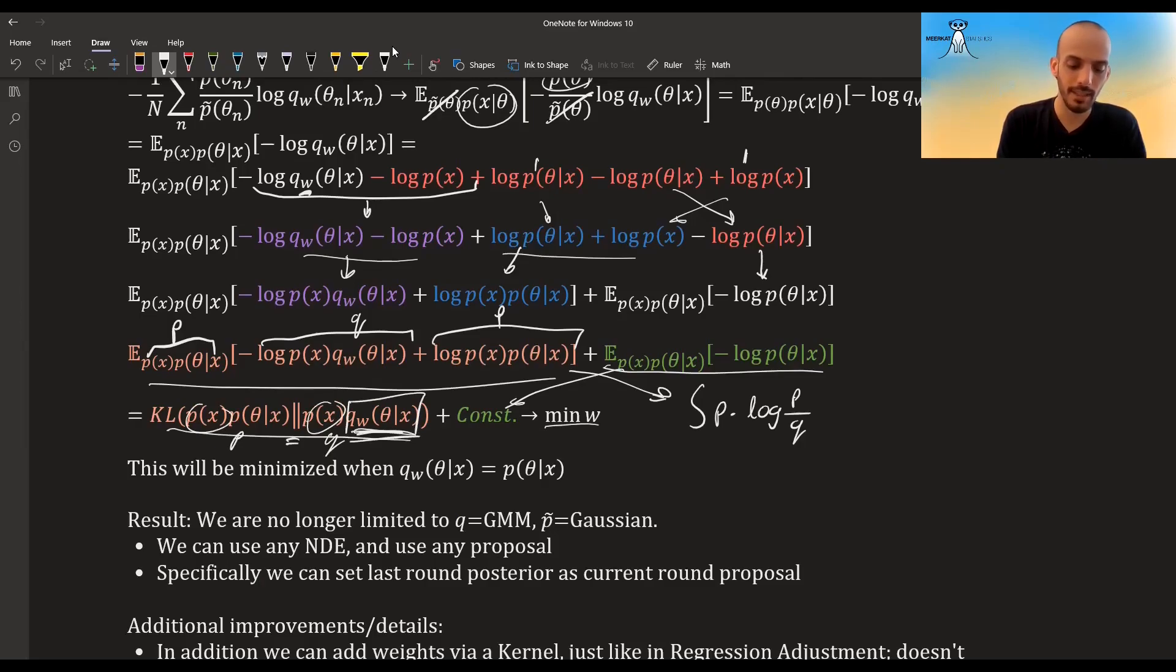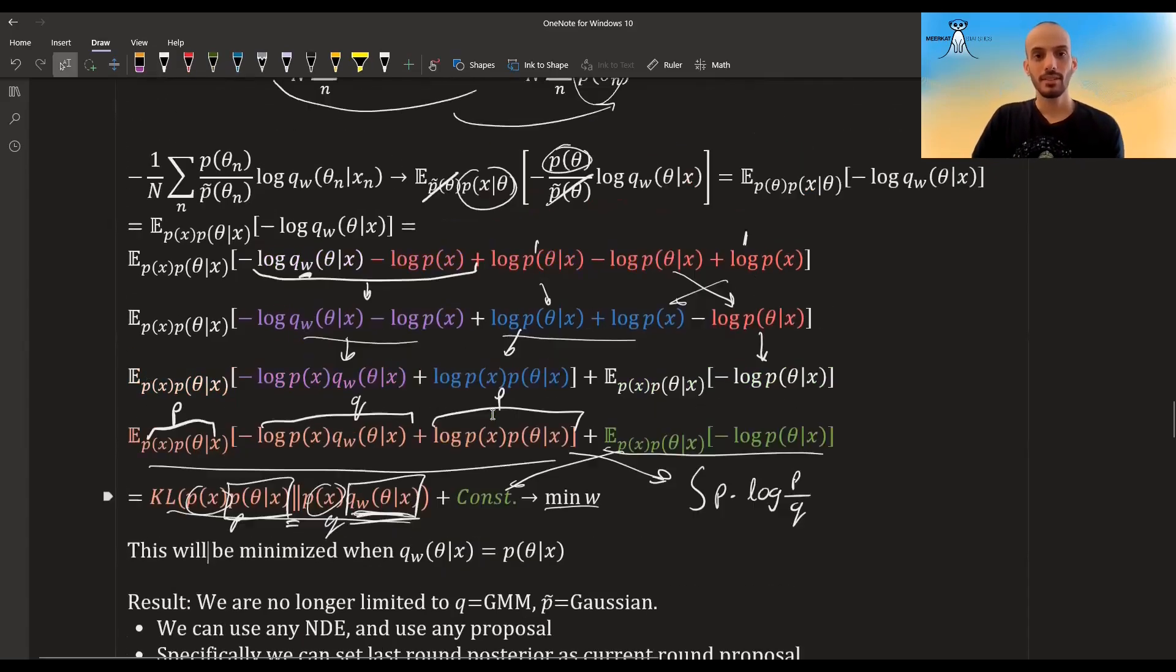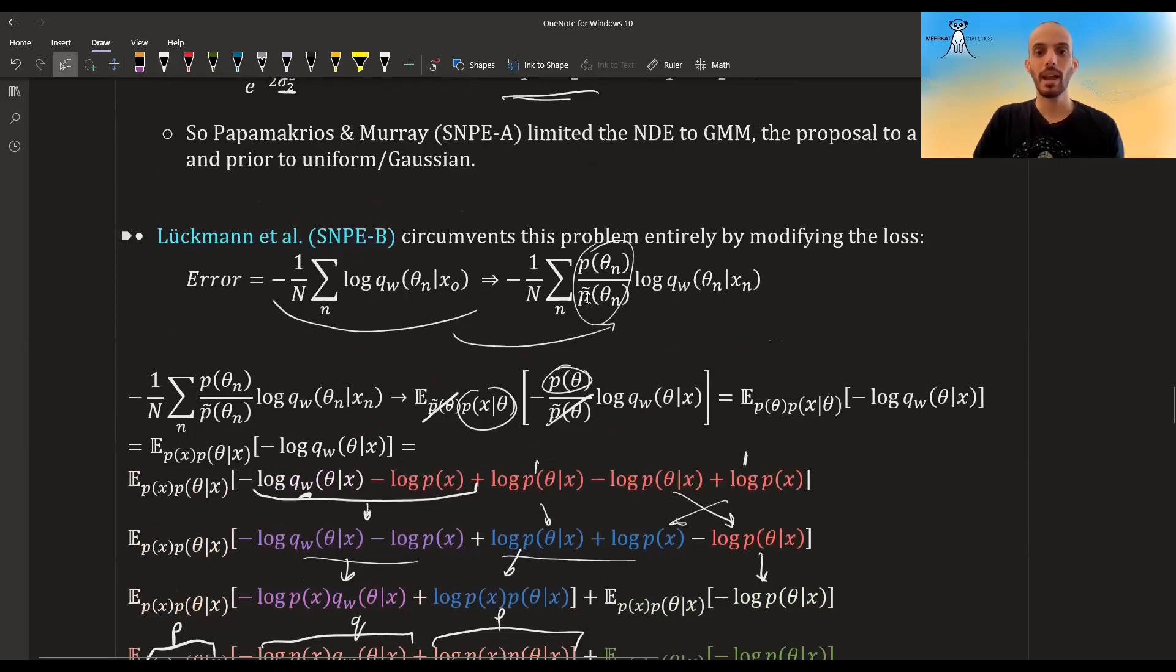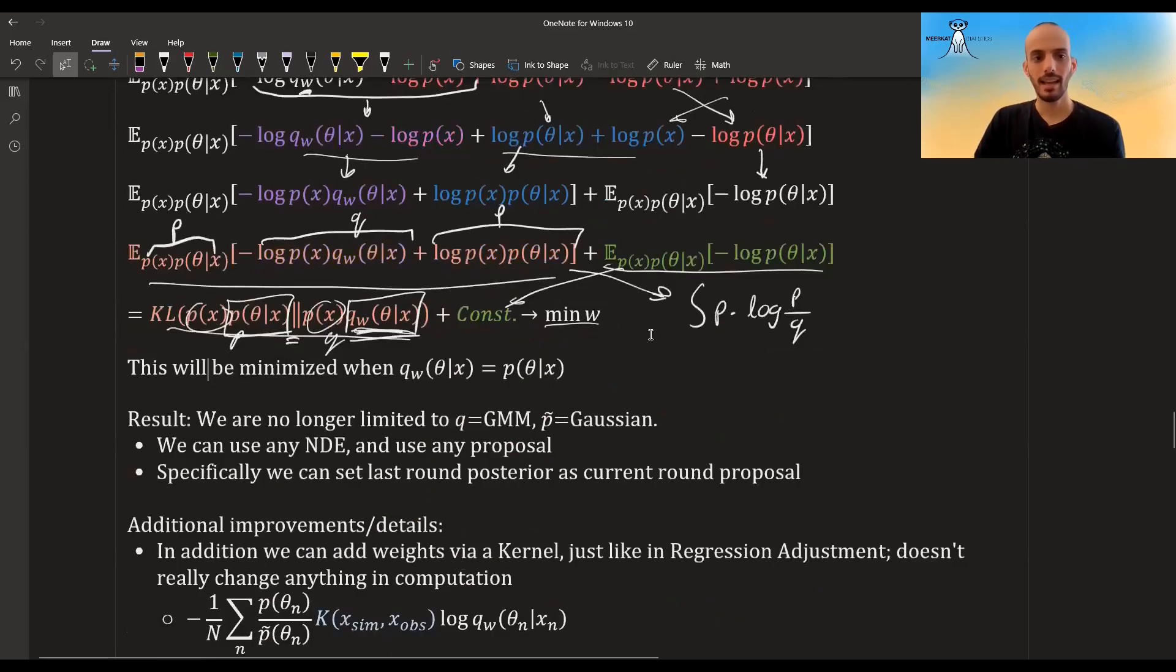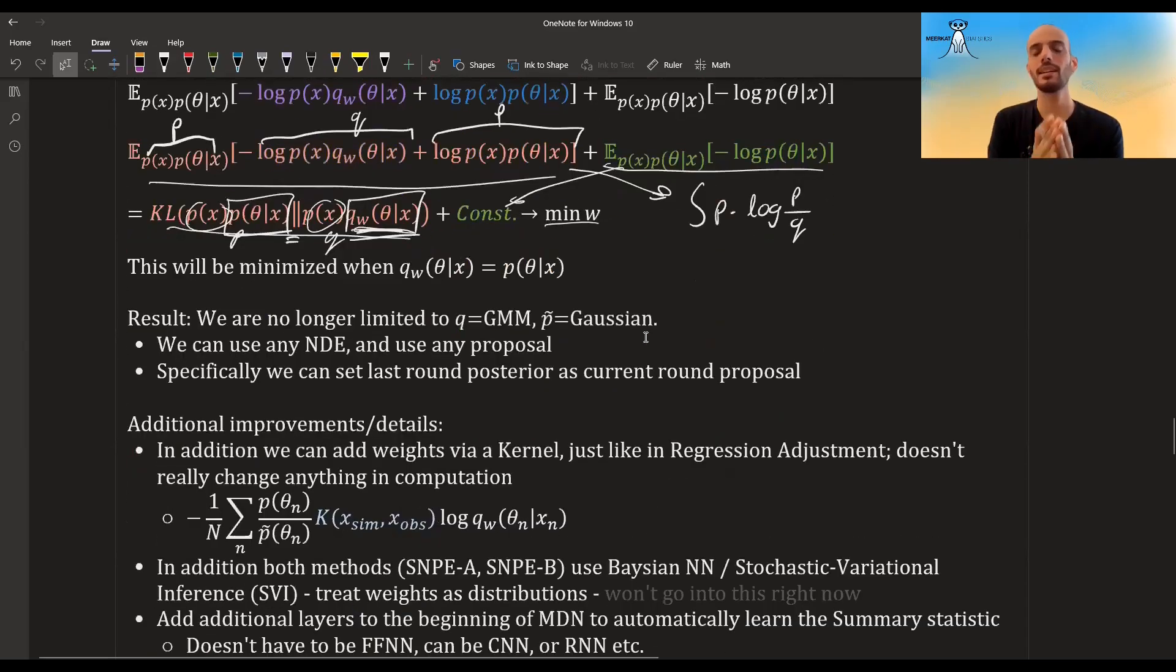We want to minimize it, and so the minimization of the Kullback-Leibler divergence is when p is equal to q, and these things are exact. So it will be minimized when this thing will be equal to this thing, meaning when the neural density estimator that we have—the GMM or something else in this case—will be equal to the true posterior.